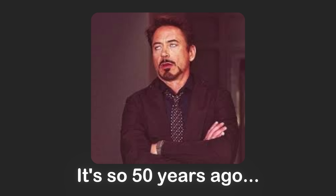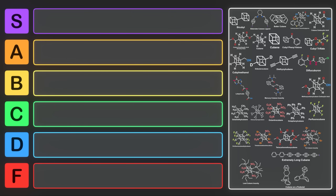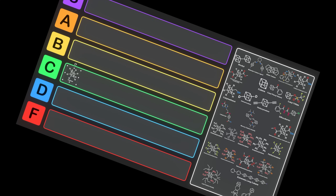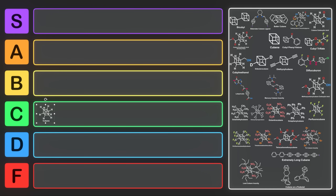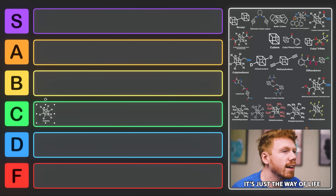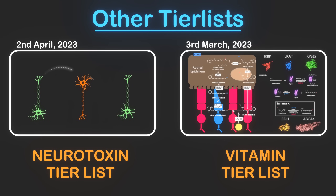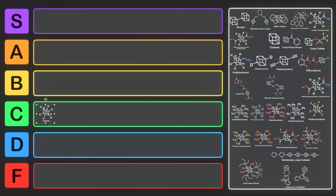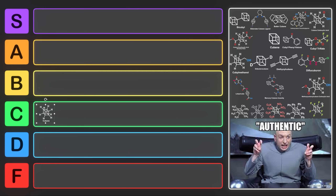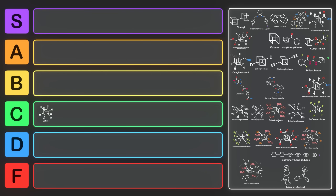Speaking of cubane, why don't we start the tier list with cubane itself? Cubane may have been the first, but it's so 50-years-ago that cubane goes right into C tier — which is appropriate because it starts with a C. Yes, we're starting the tier list off by doing that; that's just the rules today. There are a lot of other cubanes on here which are a lot more exciting — cubane compared to these others just doesn't match up.